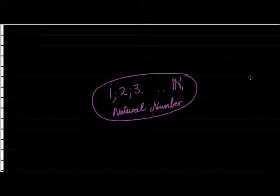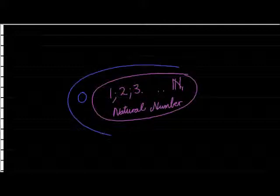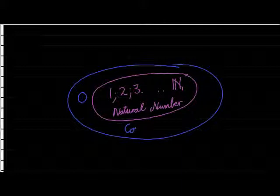That is the smallest set of numbers we have. If we include 0 in this collection of numbers — so we take all the natural numbers and add 0 — we make a new collection of numbers called the counting numbers.